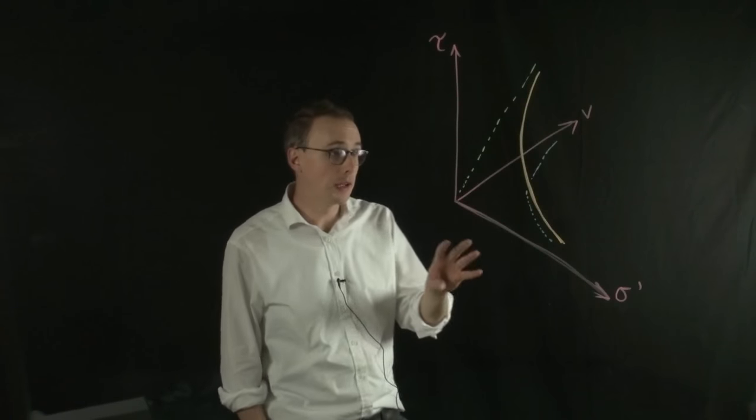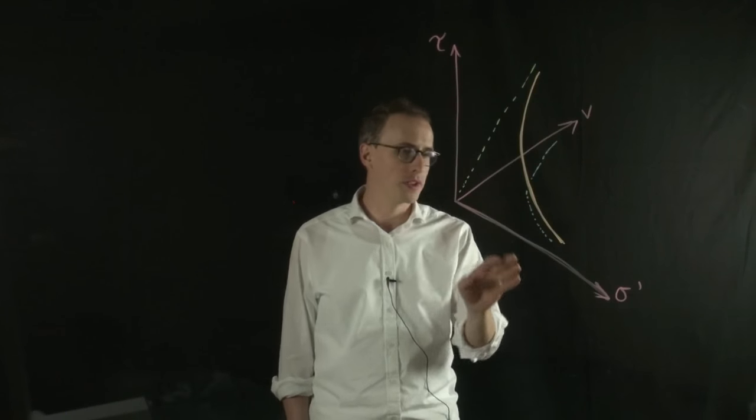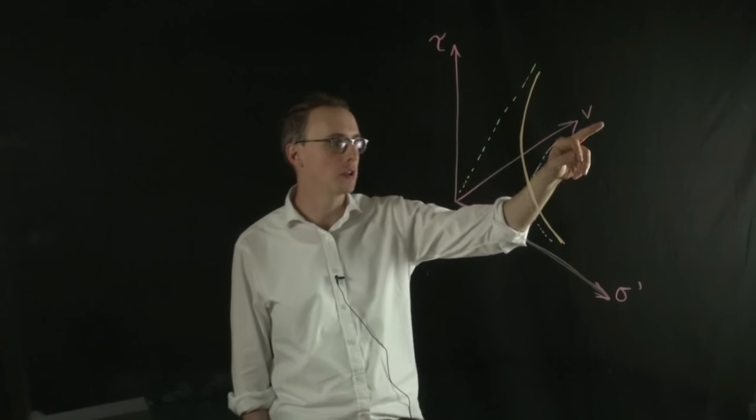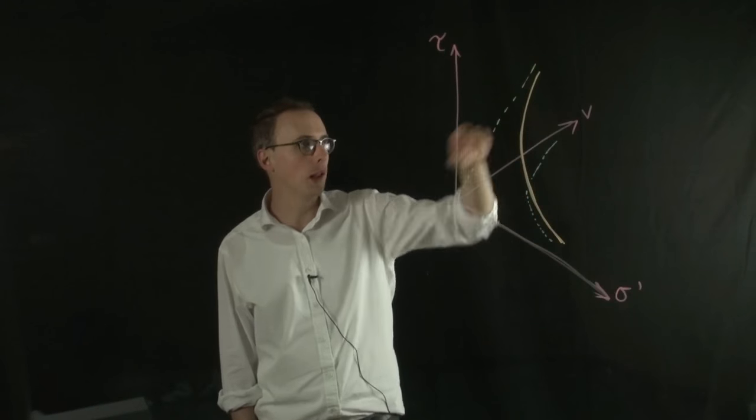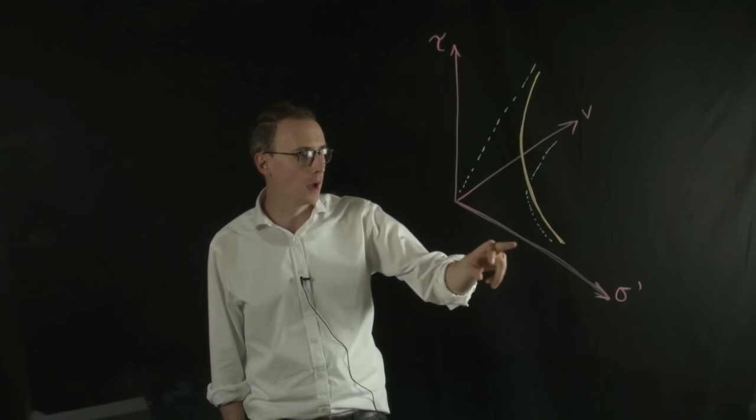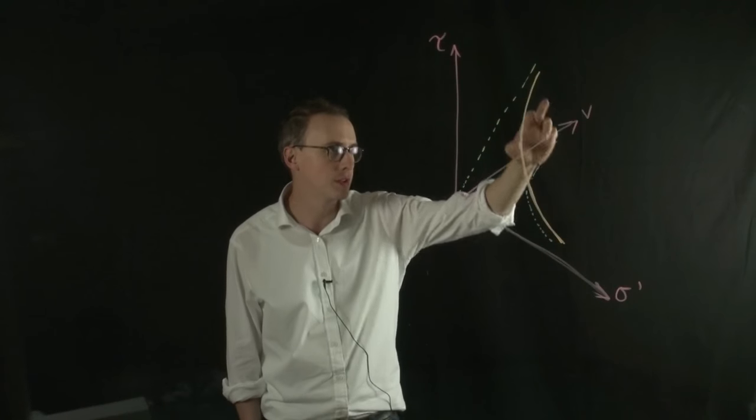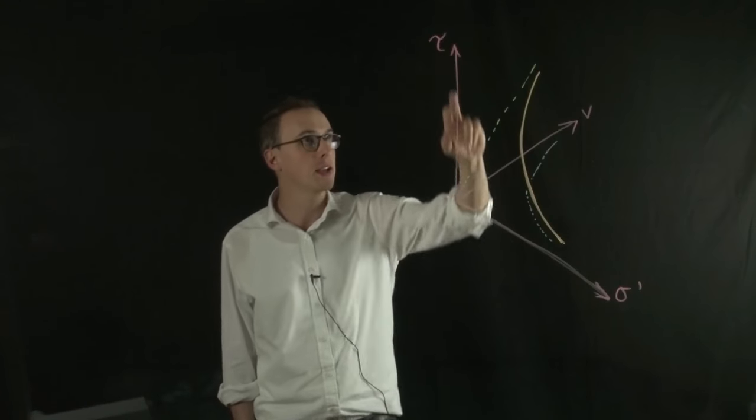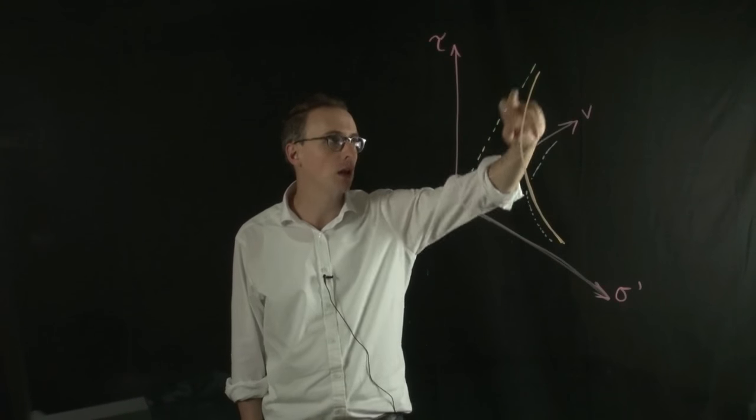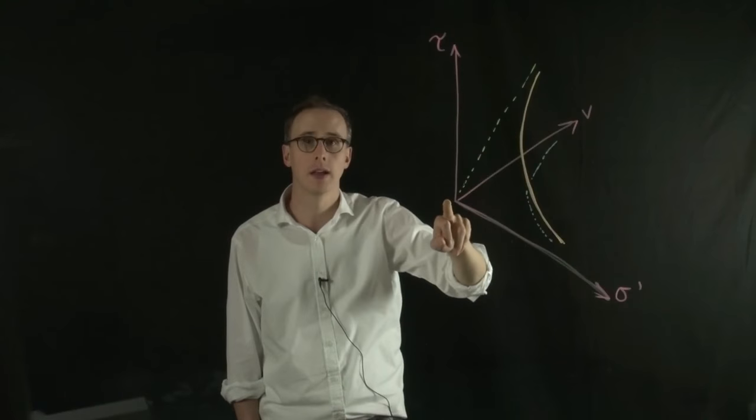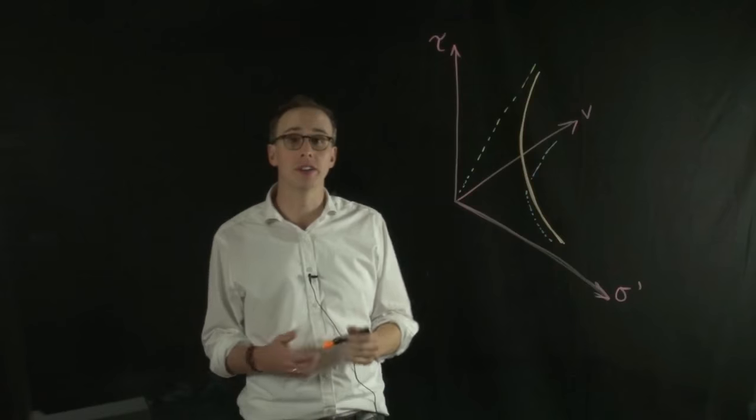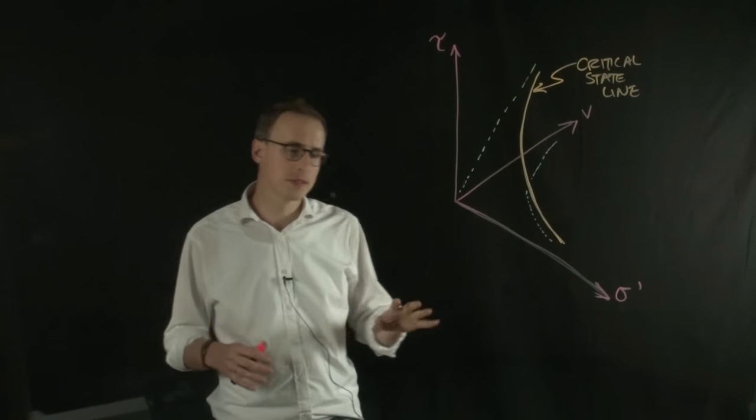So if we plotted those two lines together on the set of three axes, where we have normal effective stress, shear stress, and specific volume, we could see that it would form a line that looks like this, and the blue line underneath is the projection onto the normal effective stress and specific volume axis, and the yellow line here is the projection onto the shear stress specific volume axis, and the orange line is the critical state line.